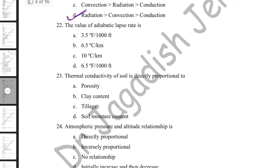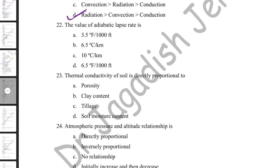The value of the adiabatic lapse rate: there are two types — normal lapse rate and adiabatic lapse rate. Normal lapse rate in the troposphere is 3.5°F per 1000 feet or 6.5°C per kilometer. The adiabatic lapse rate, describing temperature change of air as it moves, is 10°C per kilometer.